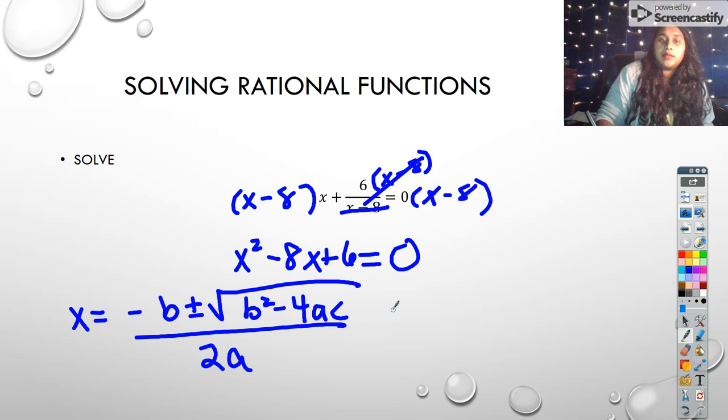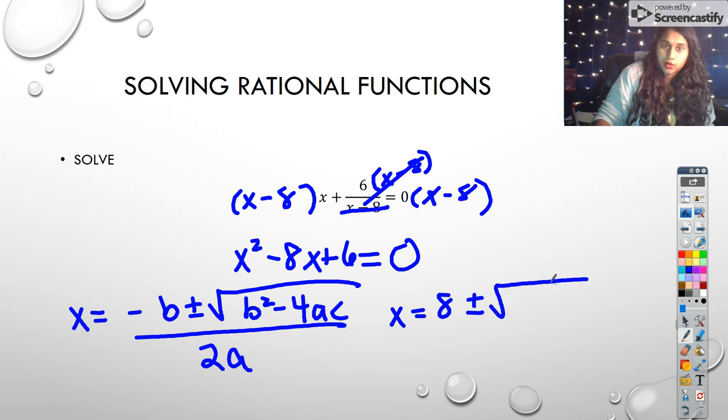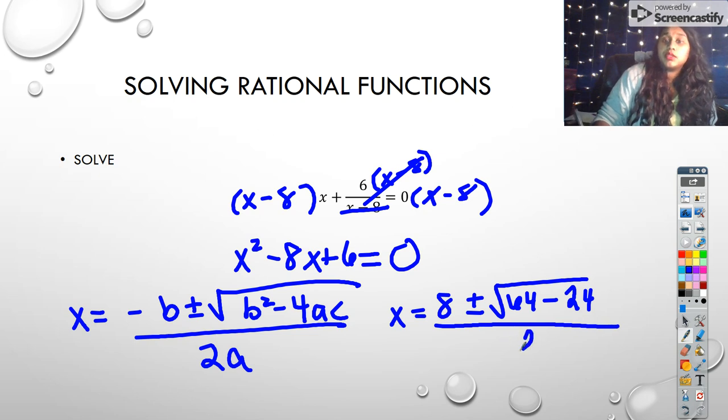Okay, so I'm going to go ahead and plug in those values. So that's a negative 8, so that's positive 8, plus or minus the square root of negative 8 squared is 64, minus 4 times 1 times 6, so 4 times 6, so 24, all over 2 times 1, so over 2.